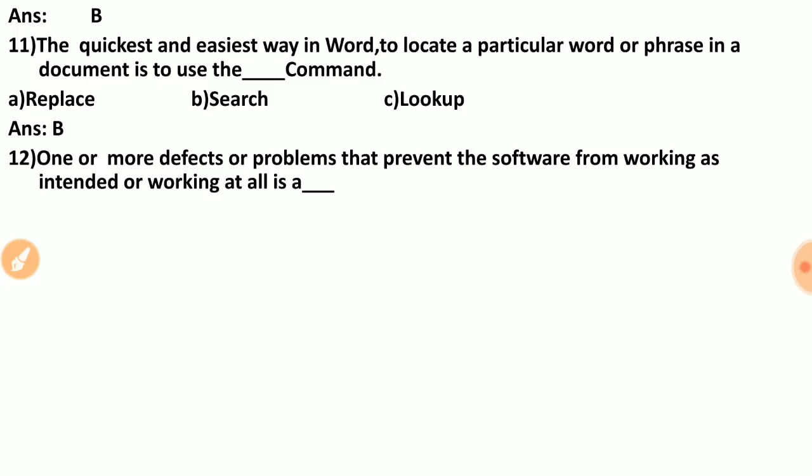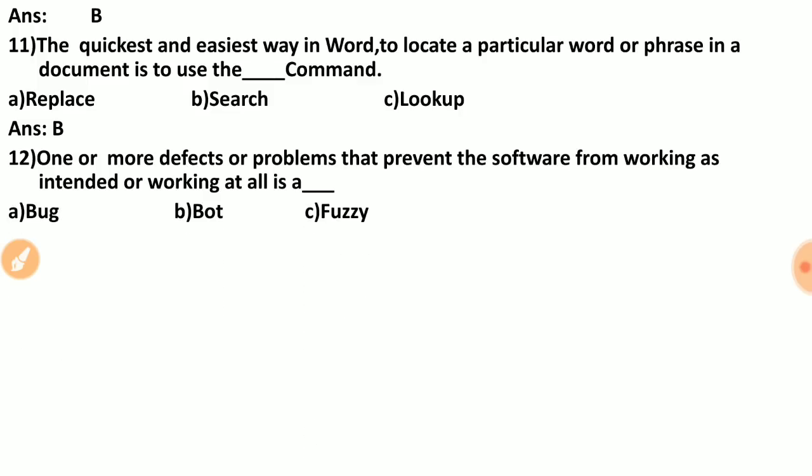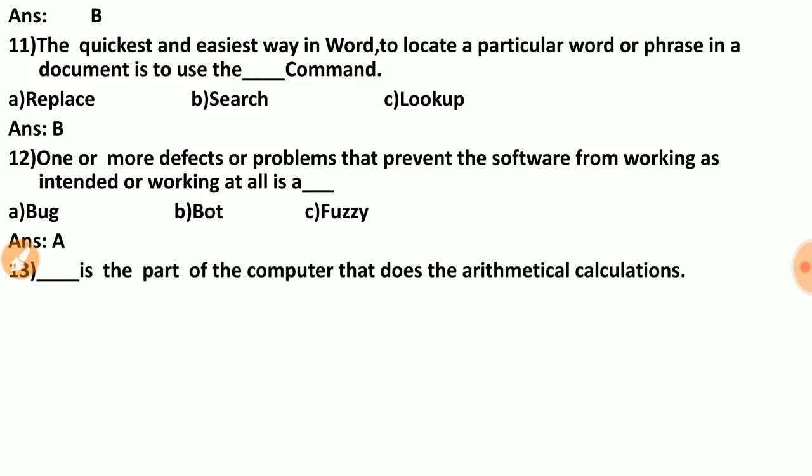Question twelve: one or more defects or problems that prevent the software from working as intended is called a dash. Options are: bug, bot, fuzzy. The correct answer is A — bug. When software has errors preventing it from working, it is called a bug.